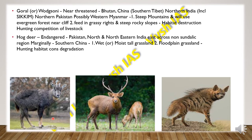Then we have the Hog Deer, which is endangered. It is found in Pakistan, north and northeastern India across the non-Sunder lake regions, and marginally in southern India. They are seen in moist or wet tall grassland regions and floodplain grasslands where vegetation is very rich. The main threats they face are hunting, habitat loss and degradation.